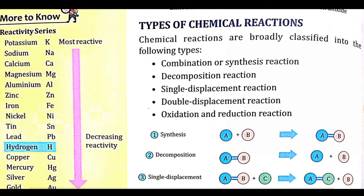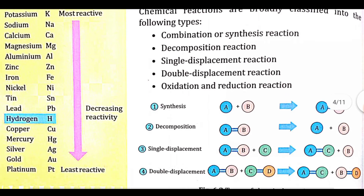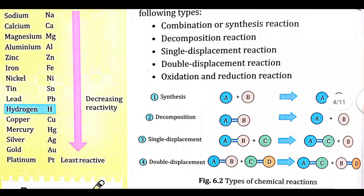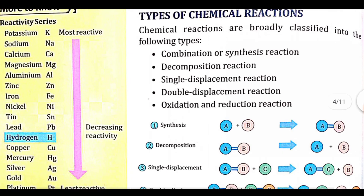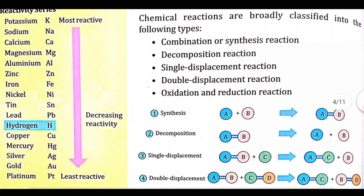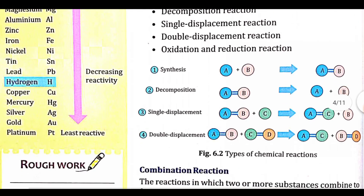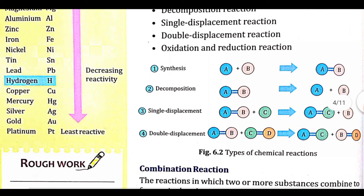Below you will get the reactivity series — from highly reactive to least reactive elements: potassium, sodium, calcium, magnesium, zinc, iron, nickel, hydrogen, copper, mercury, silver, gold, and platinum.